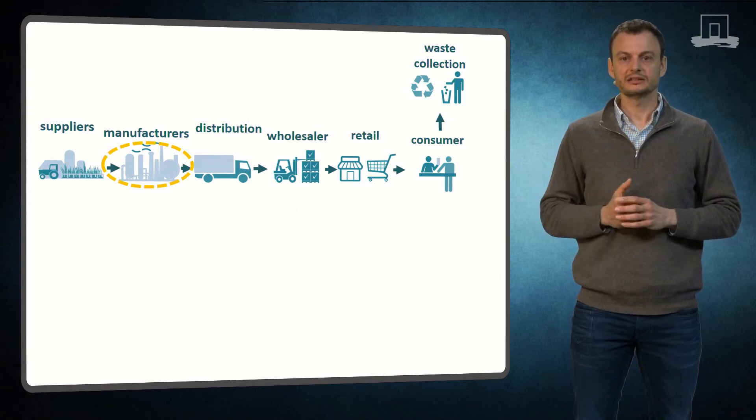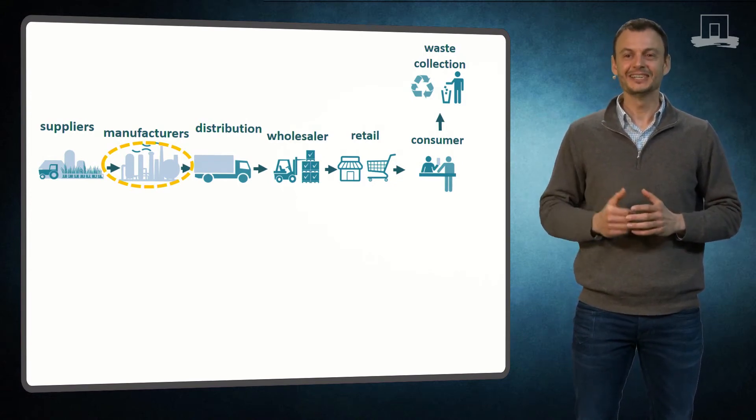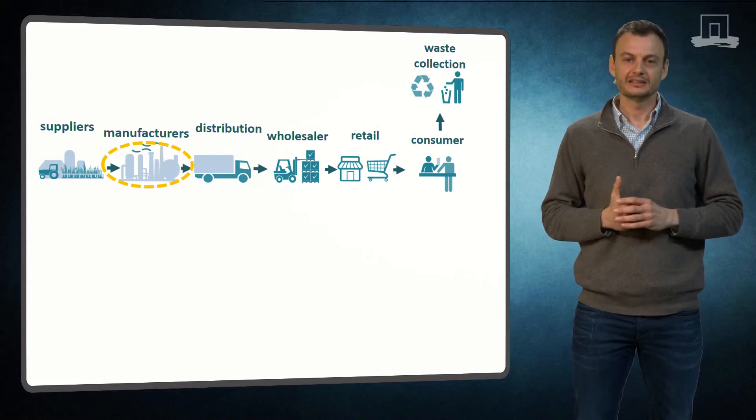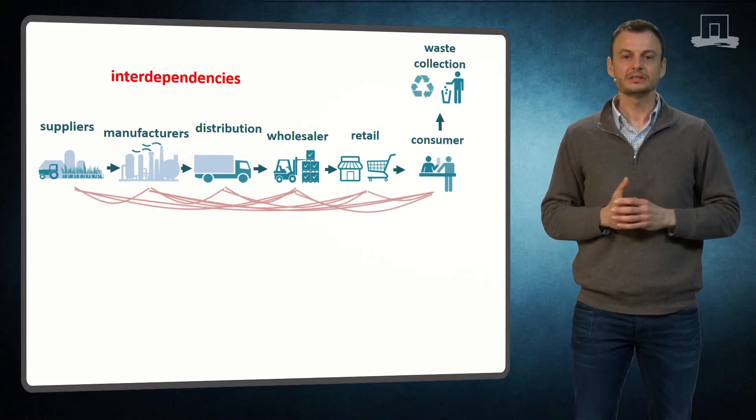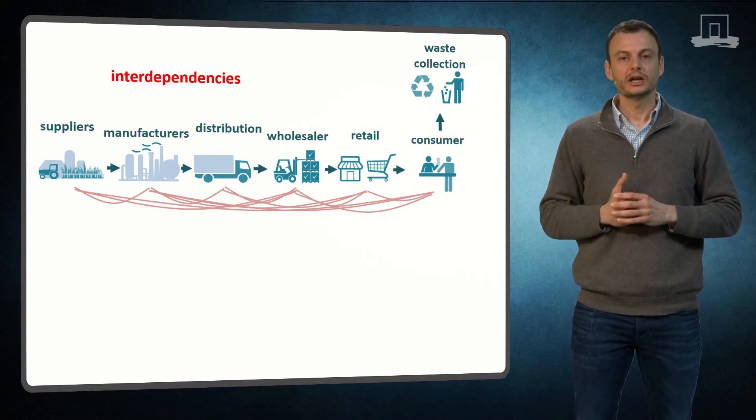Literature suggests that there is a tight interconnectedness of actors in biomass supply chains. This implies that improving sustainability of biomass supply systems requires supply chain-wide coordination and collaboration.